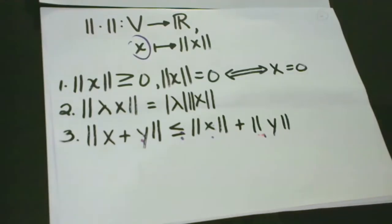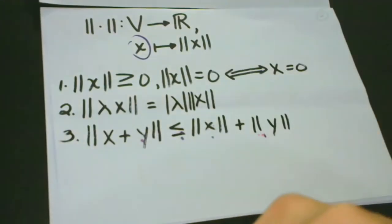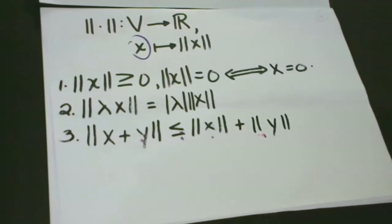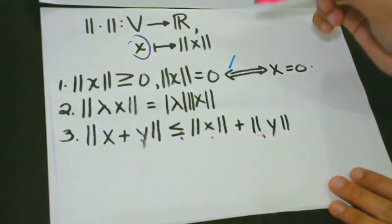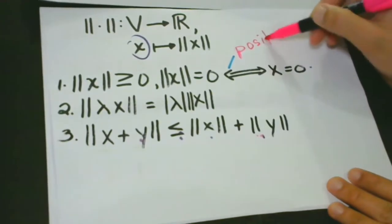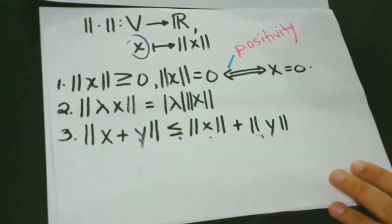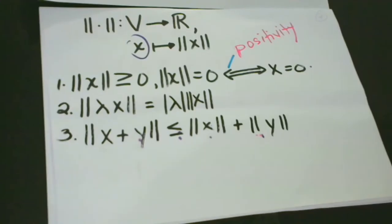For us to utilize the norm function properly, certain properties must be satisfied. There are three properties we have to take note of. The first property tells us that norms are zero if and only if the vector is a zero vector — this is called positivity. It can never be negative because we said that it's positive.